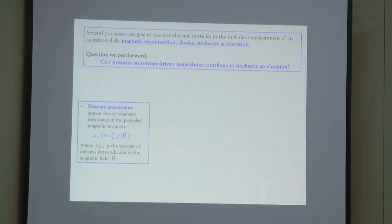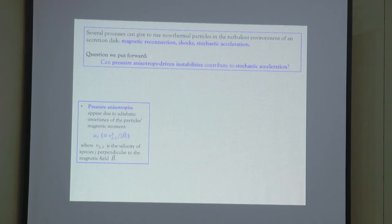The reason we think pressure anisotropies need to exist in the plasma falling into the black hole, at least in Sagittarius A star, is that in absence of collisions particles tend to preserve their adiabatic invariants, one of which is the magnetic moment. The magnetic moment is the square of the particle velocity perpendicular to the magnetic field divided by the magnitude of the magnetic field.